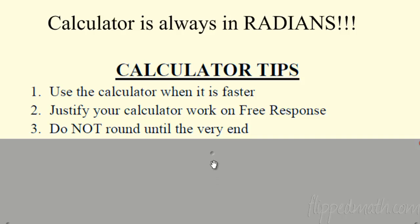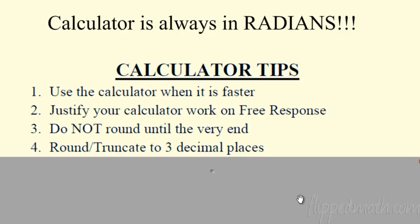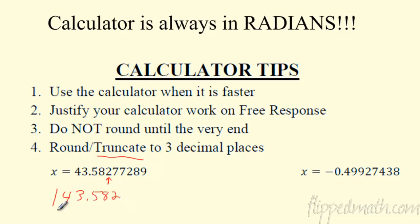They're very specific about how many decimal places. If you round early, it's going to make your answer off and you'll lose points. Speaking of rounding, there's a difference between rounding and truncating. You can round or truncate to three decimals. Truncating is easy — truncate means cut it off. So 43.5827 — you truncate after the third decimal place: 43.582. That's the one I prefer because it's easy.